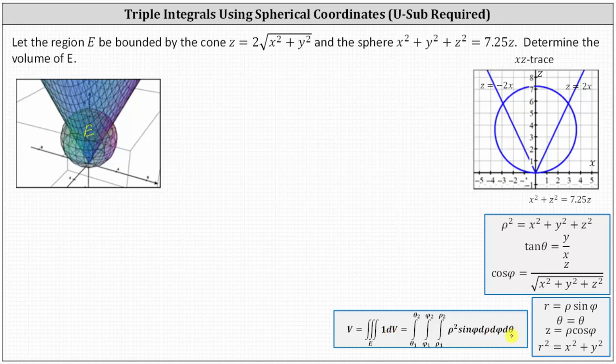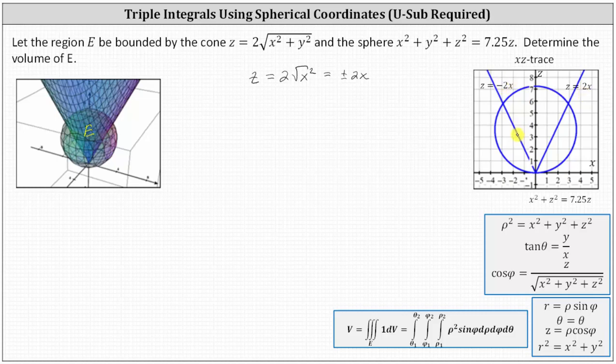It'll also be helpful to determine the XZ trace, which I've already done here on the right. Recall to determine the XZ trace, we set Y equal to zero in both equations. If we set Y equal to zero in the first equation, we have Z equals two times the square root of X squared, which simplifies to plus or minus two X, giving us this V shape. Notice on the right the slope of the line is two, and on the left the slope is negative two. For the second equation, if we set Y equal to zero, we have X squared plus Z squared equals 7.25Z, which gives us the circle.